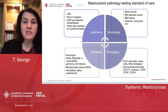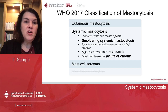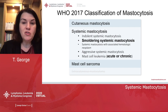Regarding classification, the 2017 WHO classification covers cutaneous and systemic disease. They added smoldering mastocytosis, clarified that mast cell leukemia could be acute or chronic, and eliminated the rare category of extracutaneous mastocytoma.